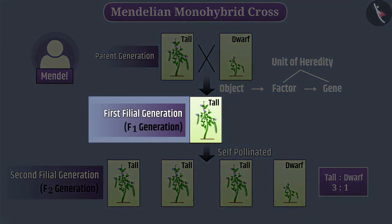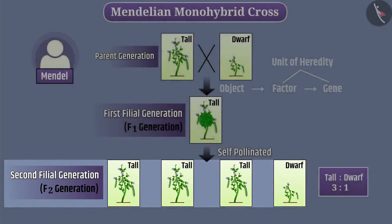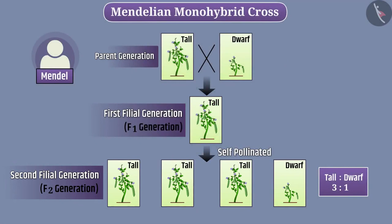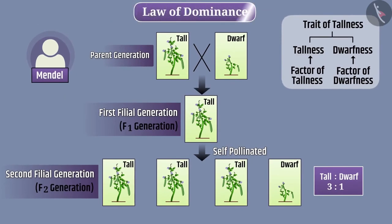All F1 generation plants were tall, but the F2 generation had a mixture of tall and dwarf plants, meaning that F1 generation plants must have inherited both tallness and dwarfness traits from the parent generation. Therefore, both factors — tallness and dwarfness — must be present in the F1 generation plant. However, only the trait of tallness gets expressed. With this understanding, Mendel proposed the law of dominance, according to which in every individual, the characters are controlled by factors. Due to involvement of two parents in sexual reproduction, factors are found in pairs.